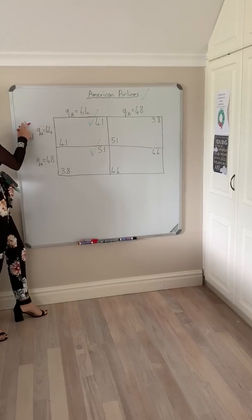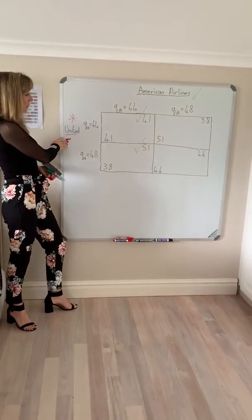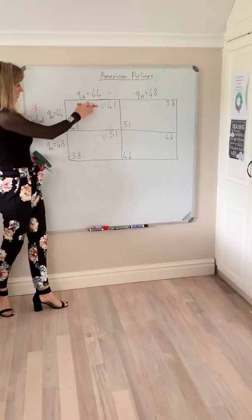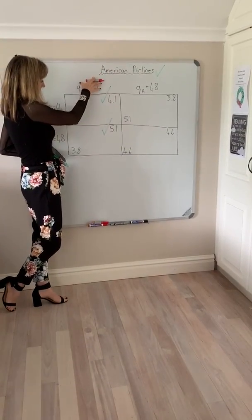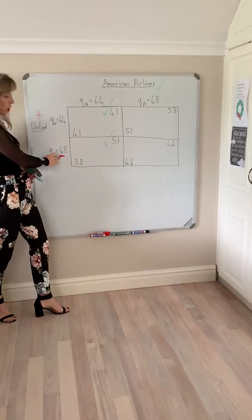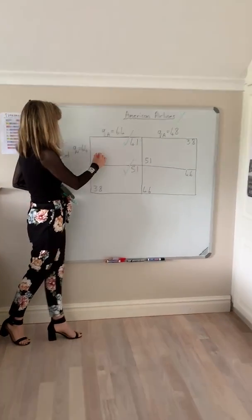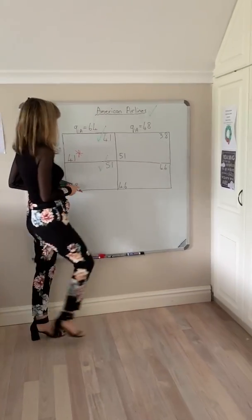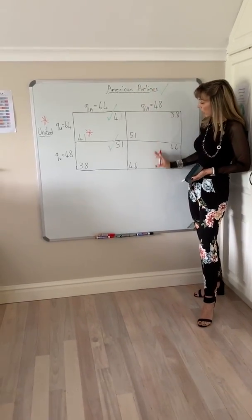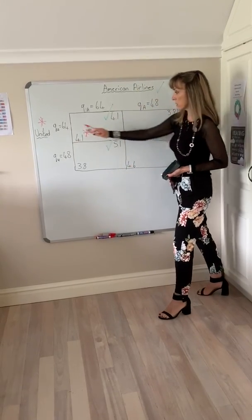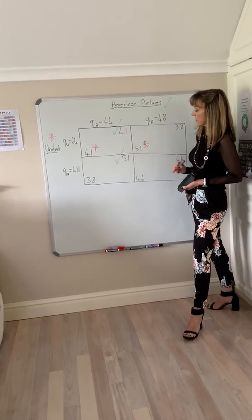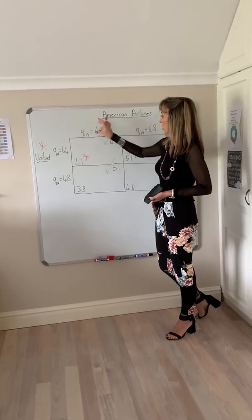We can then find if there is a dominant strategy for United — it doesn't always have to be. But again, given what American Airlines is doing, what is its best profit-maximizing response? If American is following the high output strategy, should United also produce a high output and earn 4.1, or follow a low output strategy and earn 3.8? The payoff is greater with high output, so it's going to follow the higher output in that scenario. Given that American is producing a low output, should United produce a higher output and earn that, or a lower output and earn 4.6? Once again, the higher output is greater, and we find United also has a dominant strategy — regardless of what American is doing, its dominant strategy is to produce a high output.